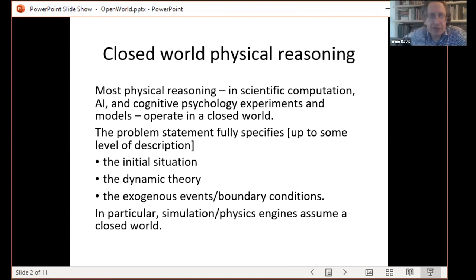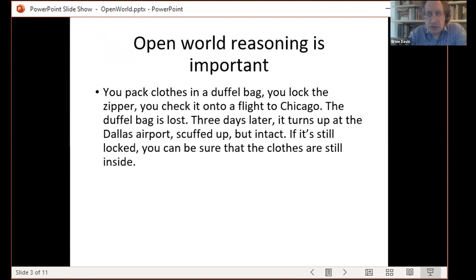And in particular, if you are using simulation or physics engines, which is by far the dominant method used in scientific computation and a very popular theory in cognitive psychology of physical reasoning, those essentially all assume a closed world. You can twist the methodology to fit or weaken the closed world assumption, but not very far. Okay, what I want to first do is in the first part of my talk, I want to talk about open world reasoning in general, and then I'll talk about what we're doing. So I want to argue first that open world reasoning is in fact important for AI systems.